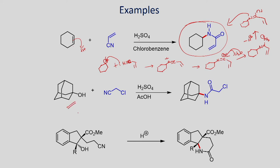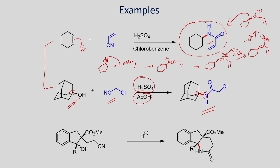Similarly, we have this tertiary alcohol, which can be readily reacted with a nitrile compound in the presence of sulfuric acid and acetic acid medium, and you will be able to generate this amide. In this way, you can make a carbon-nitrogen bond between the nitrogen of the nitrile and the carbon of the tertiary alcohol. These two are examples of intermolecular reactions.